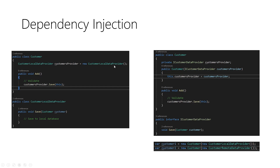As you can see, in the normal version the Customer class always depends on CustomerLocalDataProvider - for example, a class that helps you save a customer inside a local data source like an SQL or SQLite database. The Customer class is always depending on this. If you want to test it, it's immediately going to insert the data into the database. The code is also specifically written to local data provider.